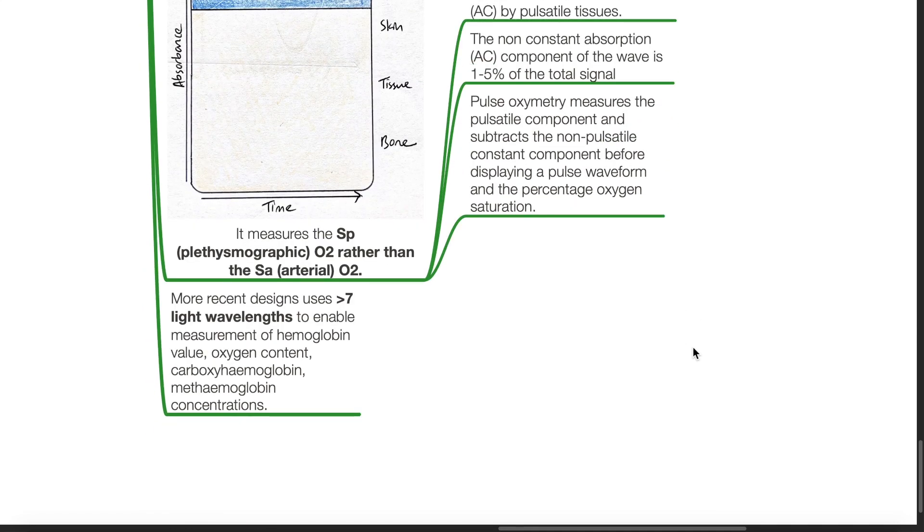More recent designs use more than 7 light wavelengths to enable the measurement of hemoglobin value, oxygen content, carboxyhemoglobin, and methemoglobin concentrations.